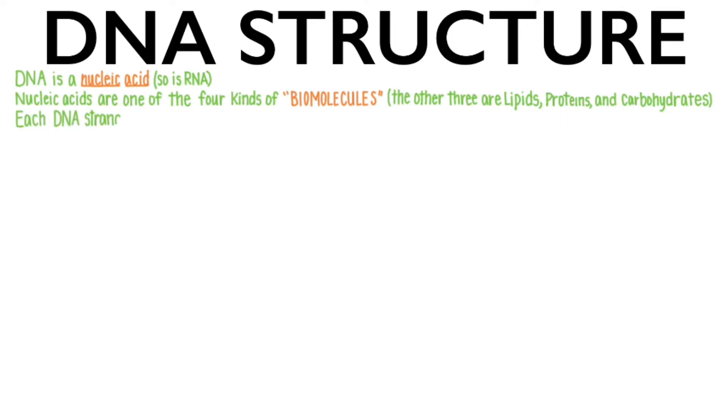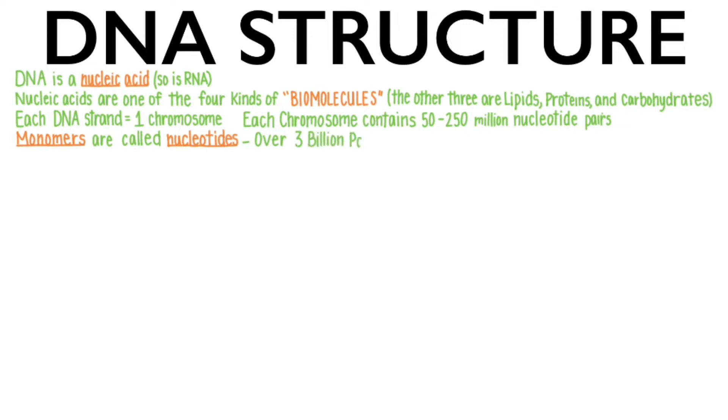Each DNA strand contains the genetic information of one chromosome. Each chromosome contains 50 to 250 million nucleotide pairs, depending on how long that chromosome's DNA strand is. The monomers of DNA are called nucleotides. Since there are 46 strands of DNA, there are over 3 billion nucleotide pairs in each body cell.